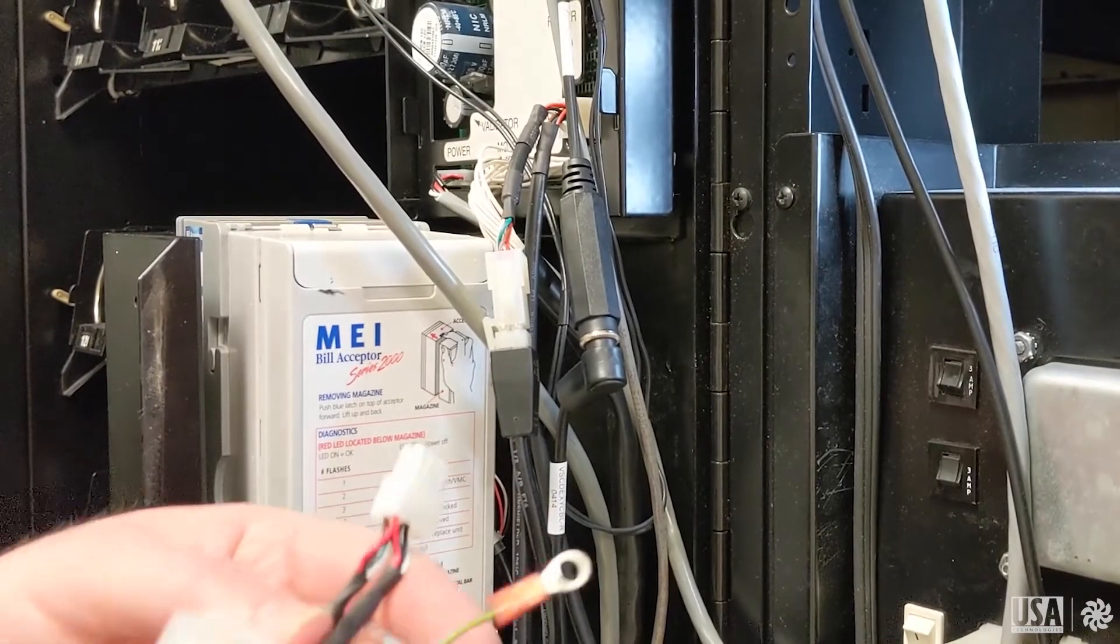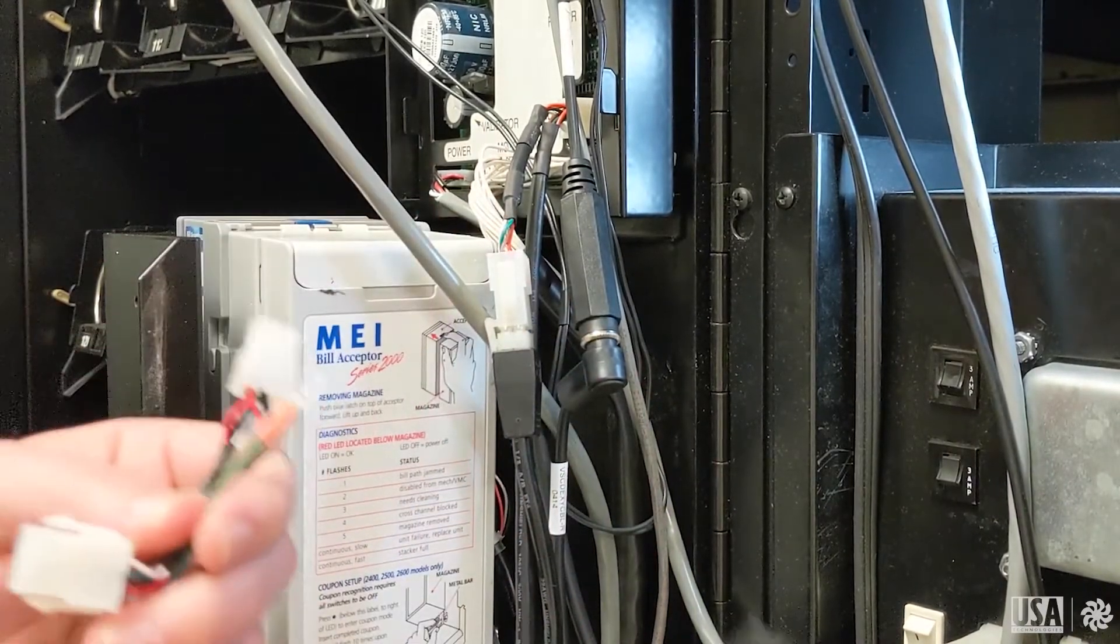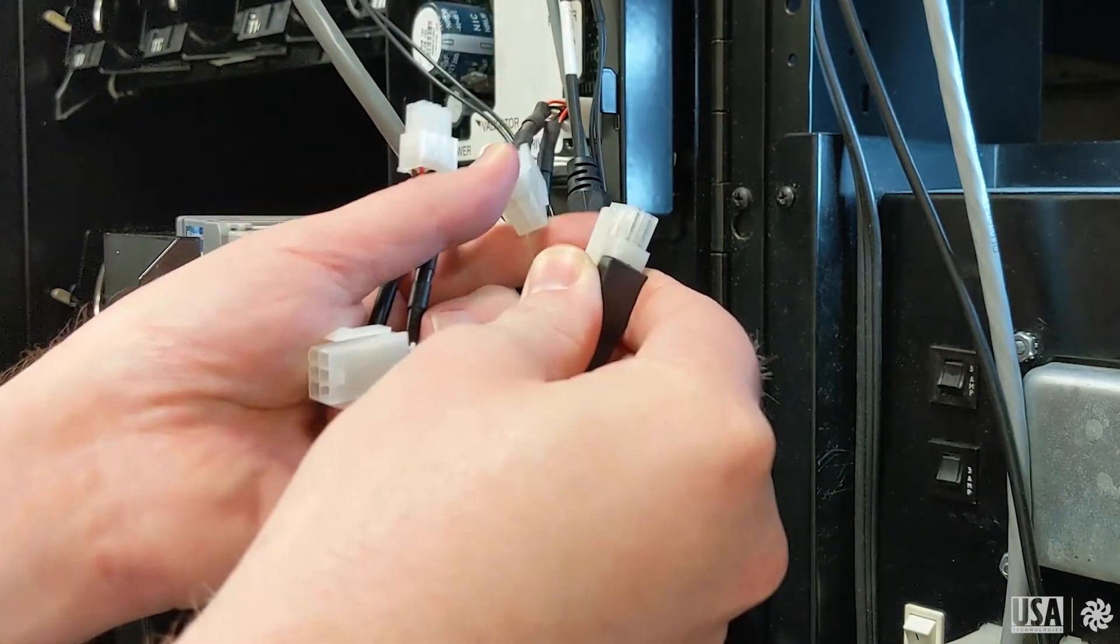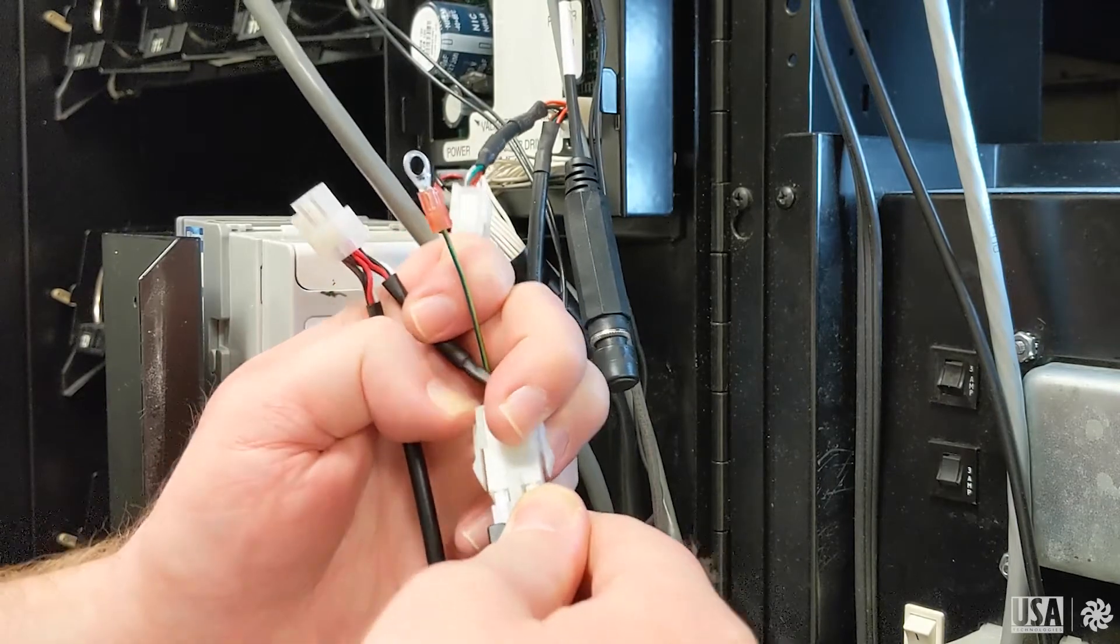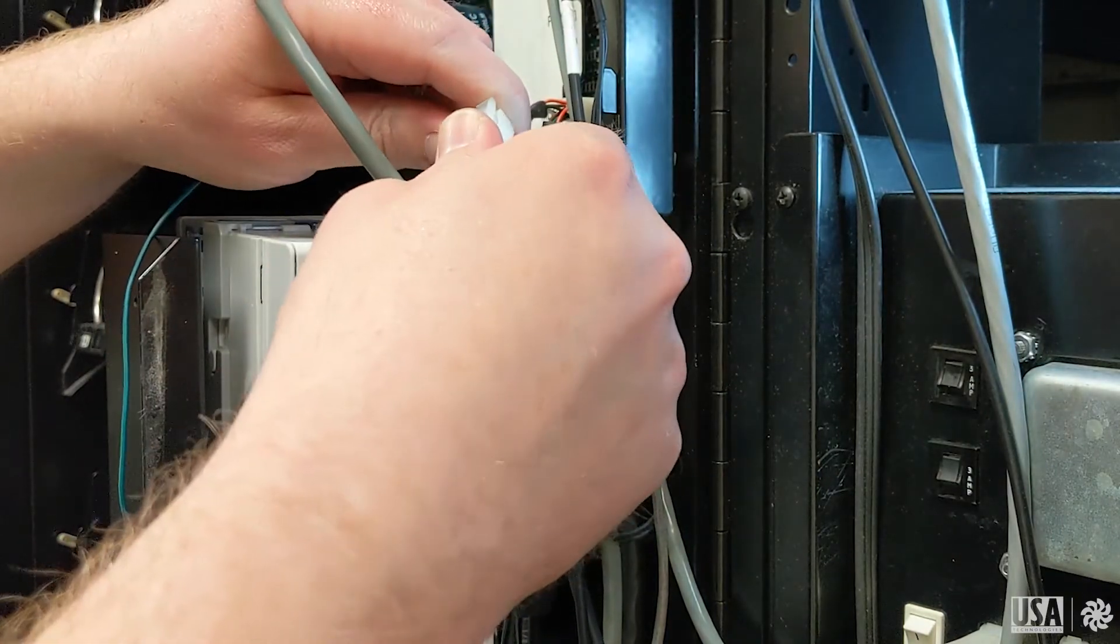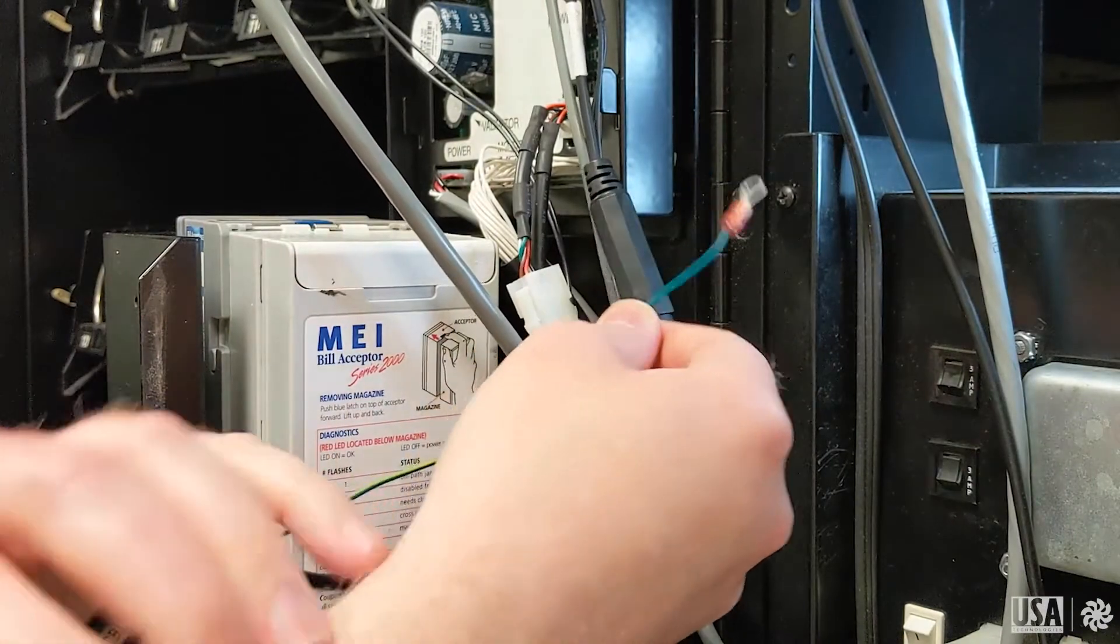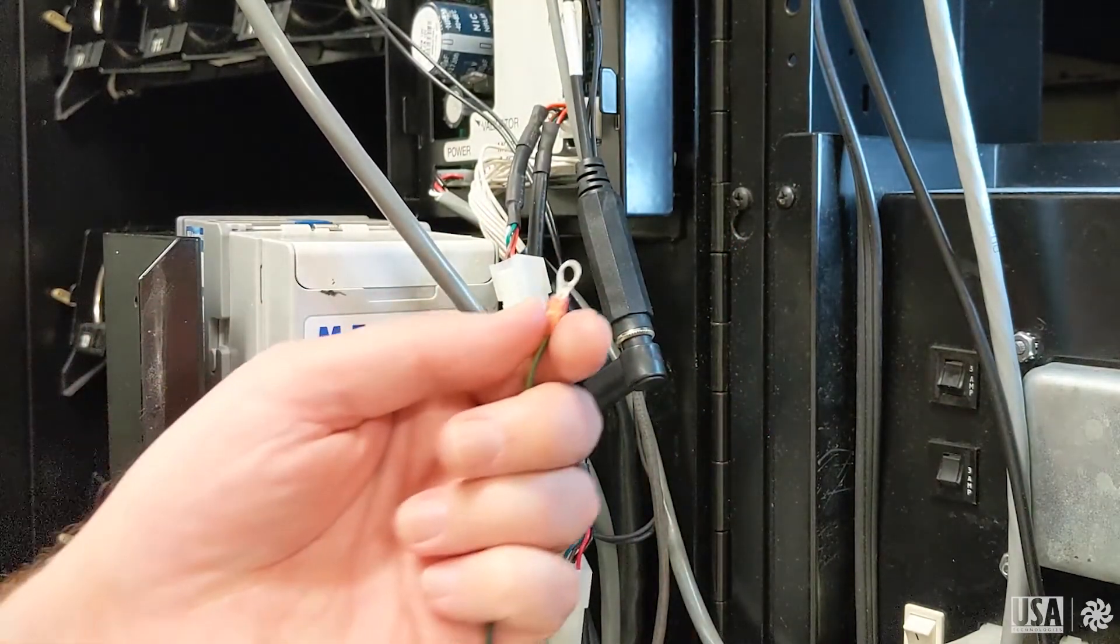Next, we'll want to install the MDB cable into the machine. First, make sure the machine is powered off, and then we'll find the MDB lead off of the board connecting to the bill acceptor. Disconnect that and install the MDB lead for the interactive unit in between. This puts the unit in first position, and it is where all ePort units should always be installed.